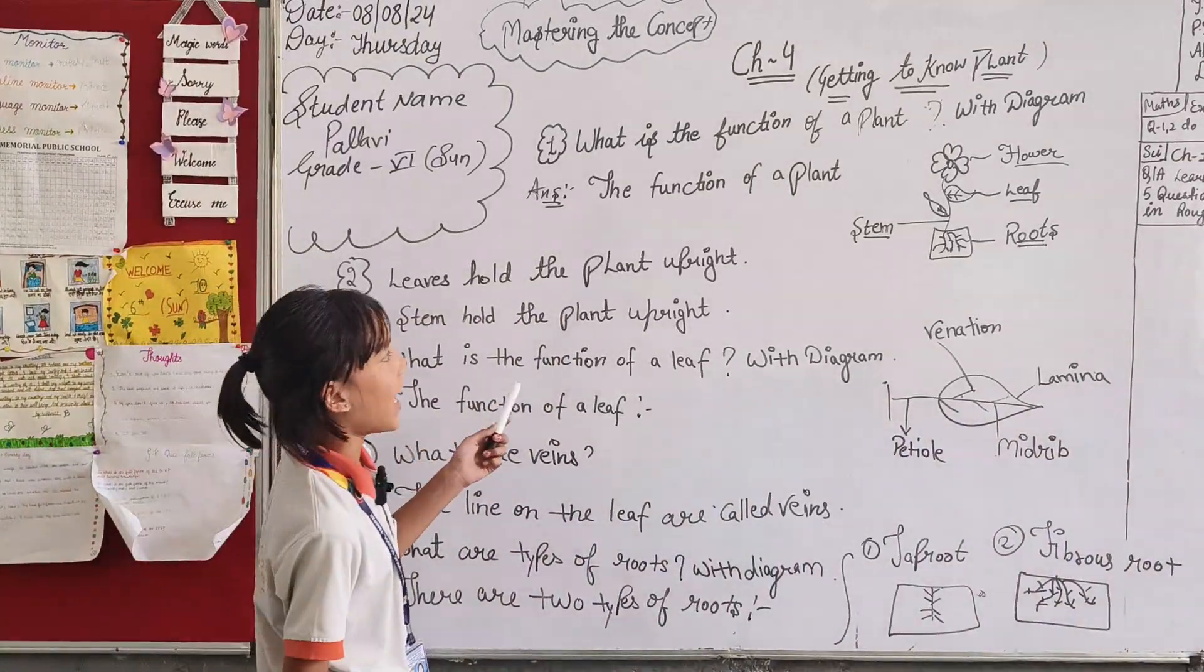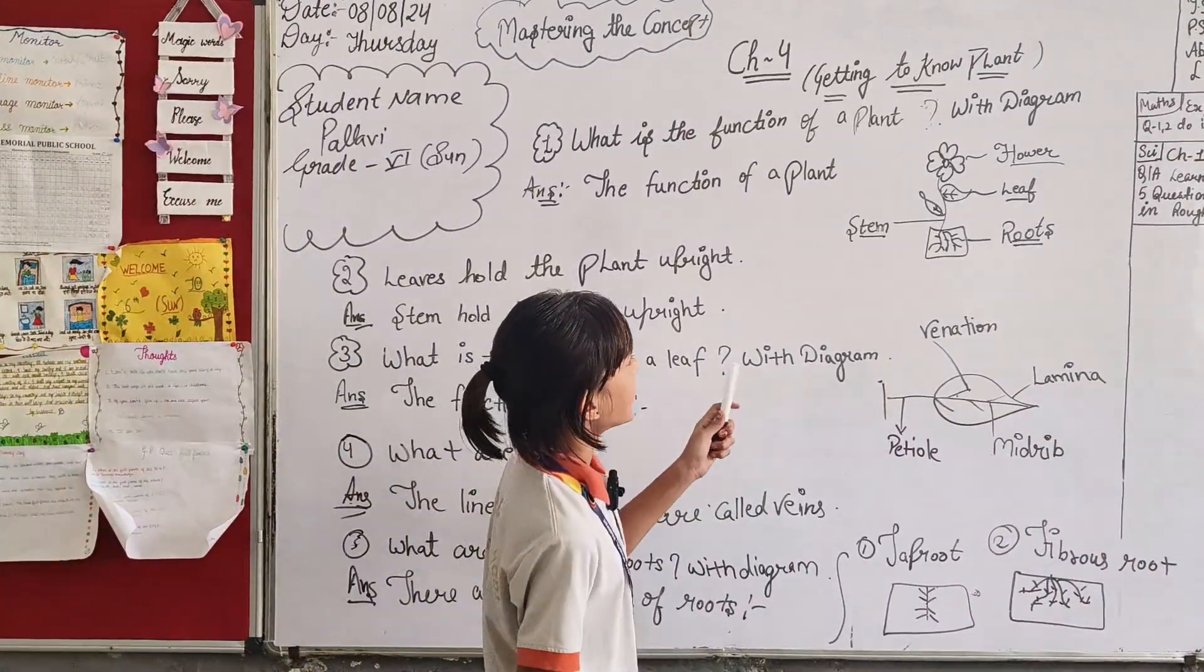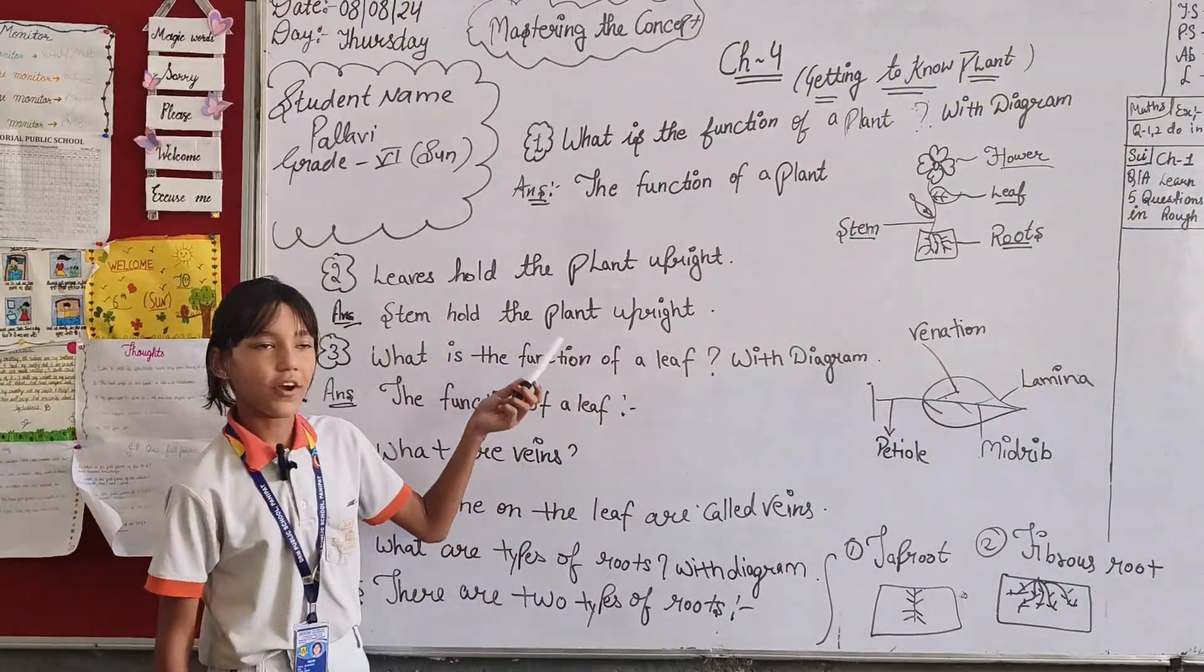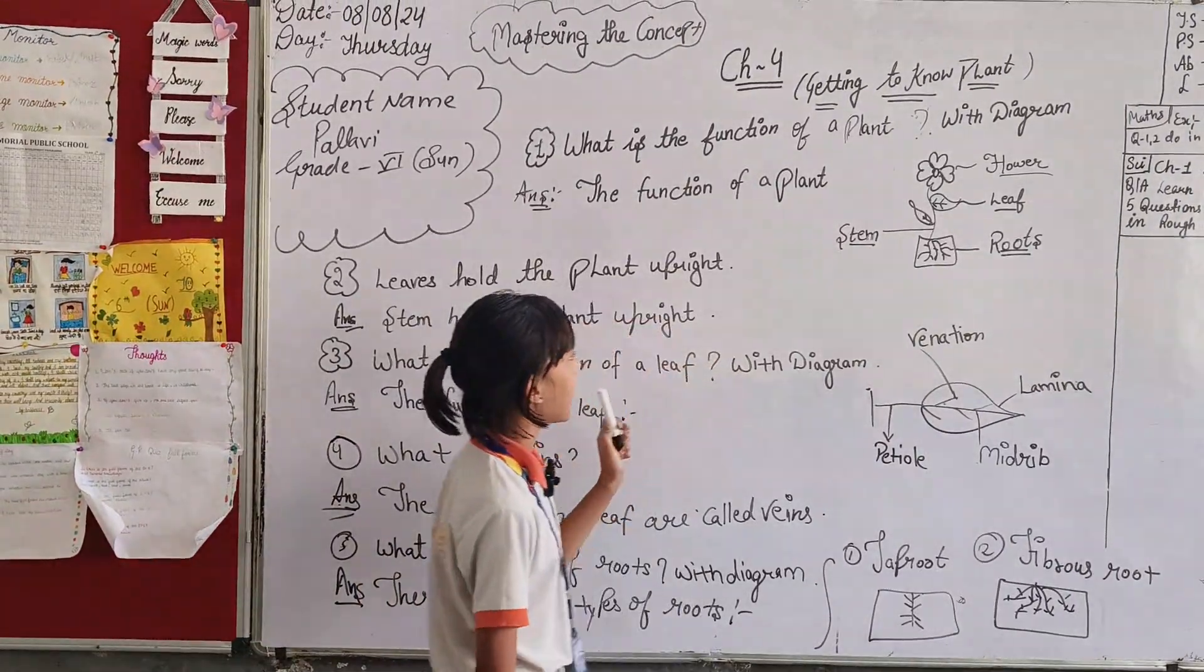First thing, what is the function of a plant? Let's tell the function of a plant with a diagram. With the diagram, the function of a plant is flower, leaf, fruit and stem.